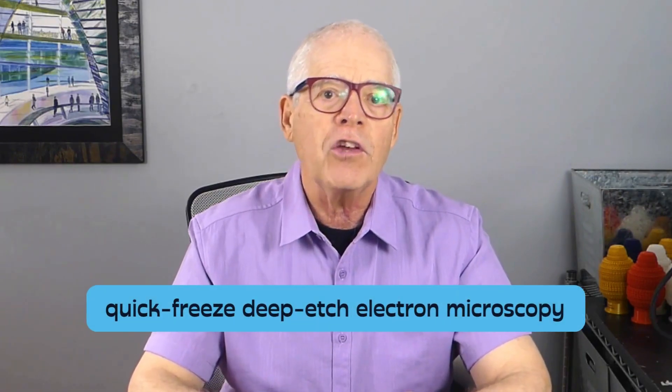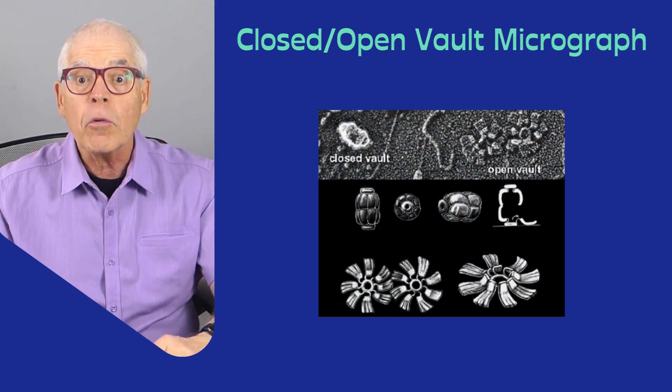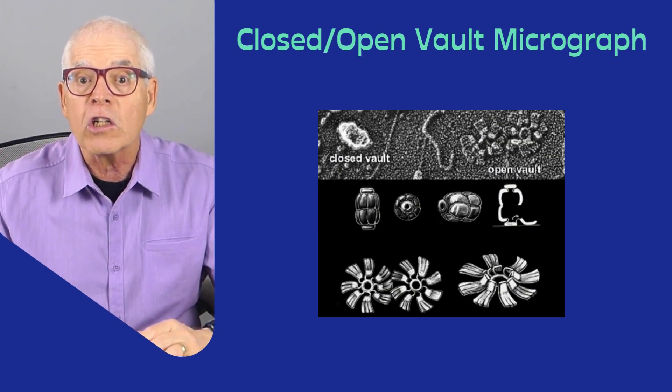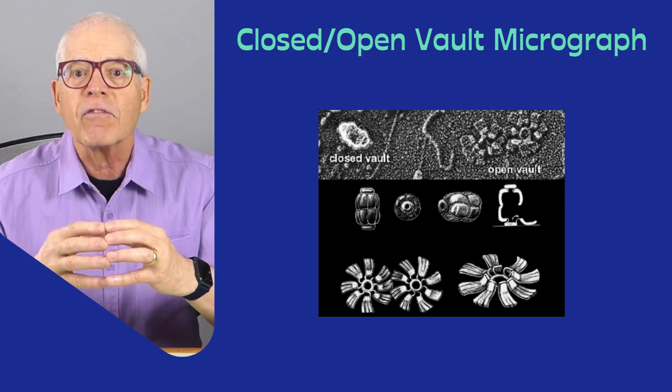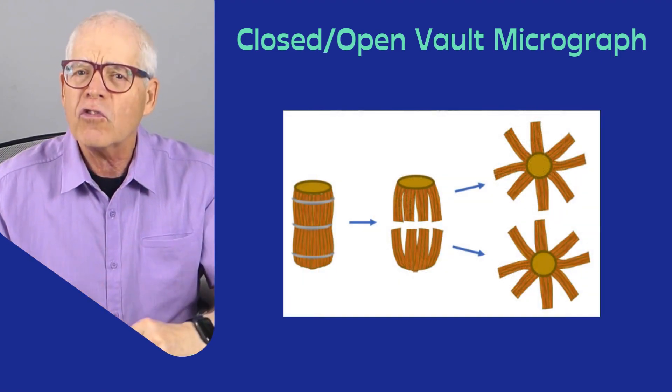A couple years after finding the vault, my lab partnered with a superb cell biologist and electron microscopist from Washington University, St. Louis. His name is John Heuser. John had perfected a method for looking at cells and particles called quick-freeze deep-etch electron microscopy. The procedure, when applied to vaults, revealed a new and completely unexpected structural complexity. When John applied his technique to vaults, some of the vaults appeared to open into delicate flower-like structures in which eight rectangular petals are joined to a central ring. Here's a micrograph of the closed and open vault, and underneath, an artist's sketch describing hundreds of John's images. Our interpretation was that the vault was like a barrel and that the flower petals were from opening of the barrel staves. Here's a cartoon to illustrate that model.